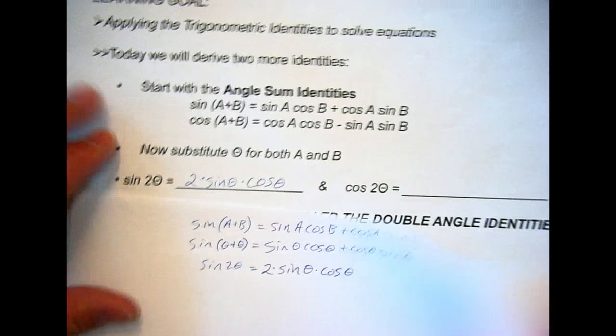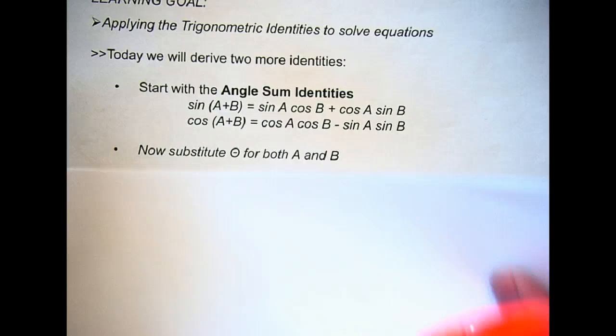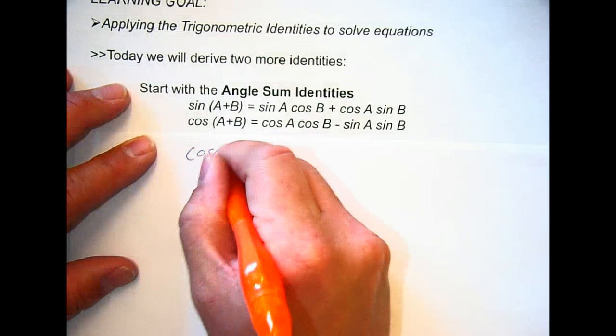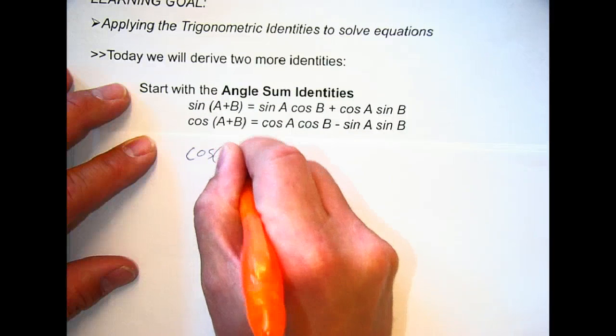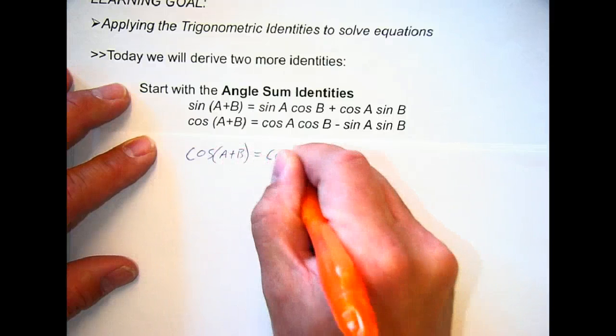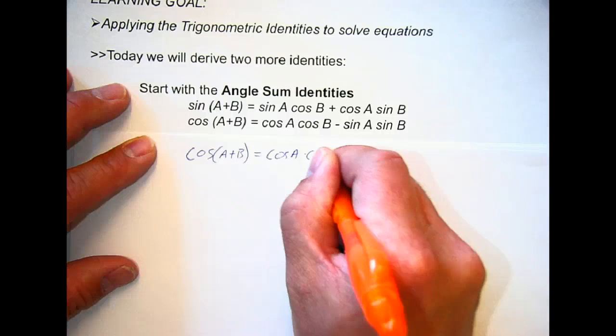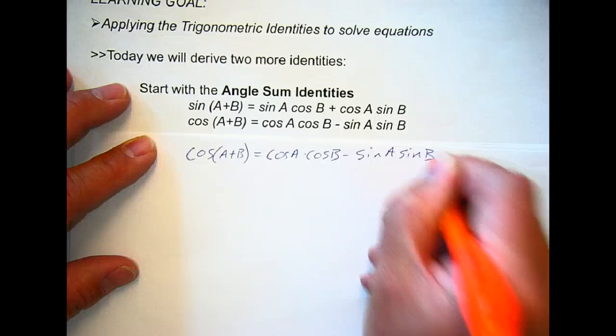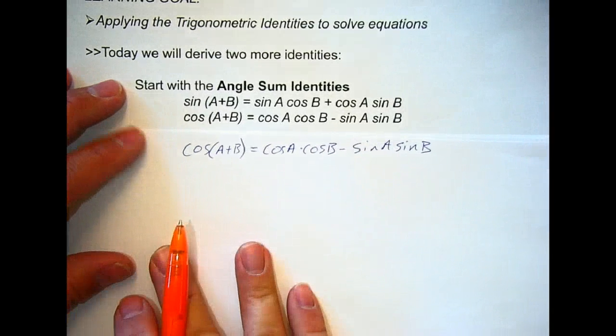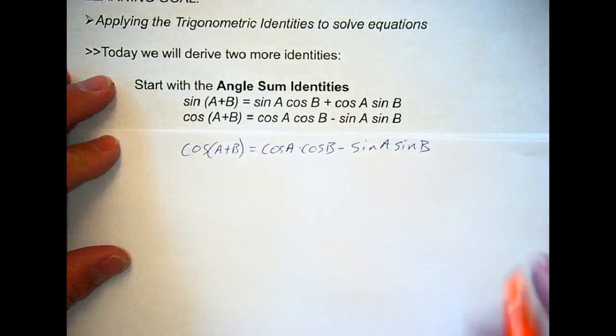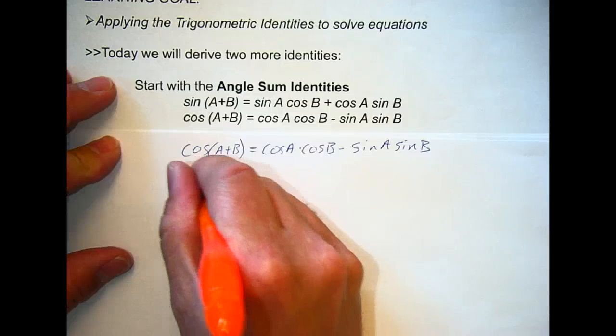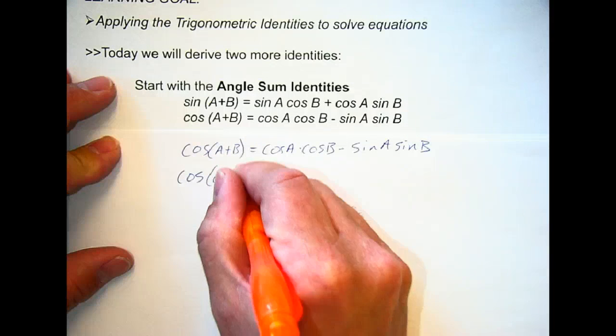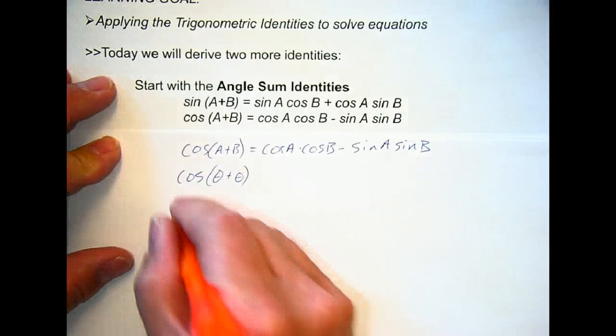We do the same thing for cosine. So plug that in. Cos A plus B. Cos A cos B minus sine A sine B. I had a pretty good joke about sine, cosine, tangent. I'll see if I can follow it. Put it up later. You guys will get a chuckle, maybe, if you know who it's about. Plug in theta for both A and B. That gives you cos 2 theta.